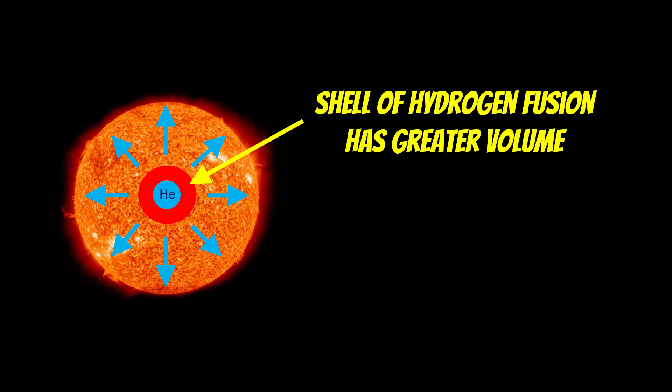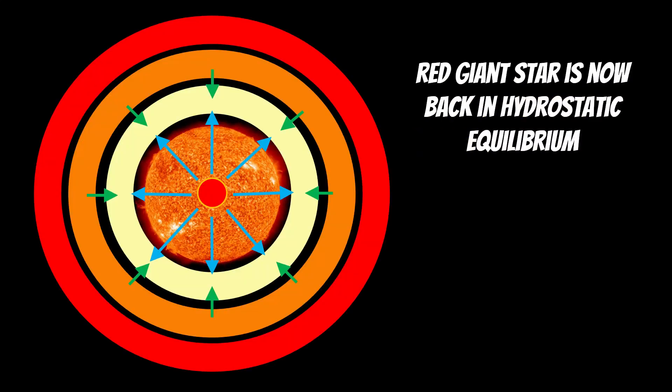Now the thing is the gravitational force hasn't changed, so the gravitational force trying to collapse is the same because the mass of the star hasn't changed. But there's a greater force outward now, and that causes a swelling of the star. The outer layers become more puffed out, and that's why it will become a red giant too.